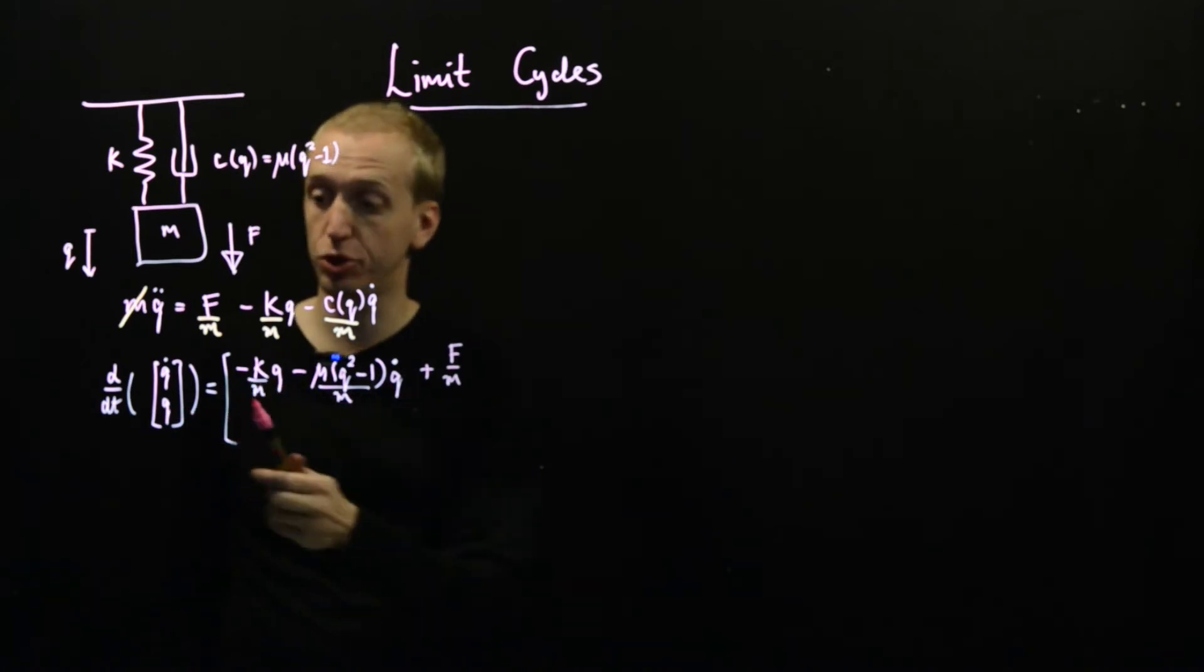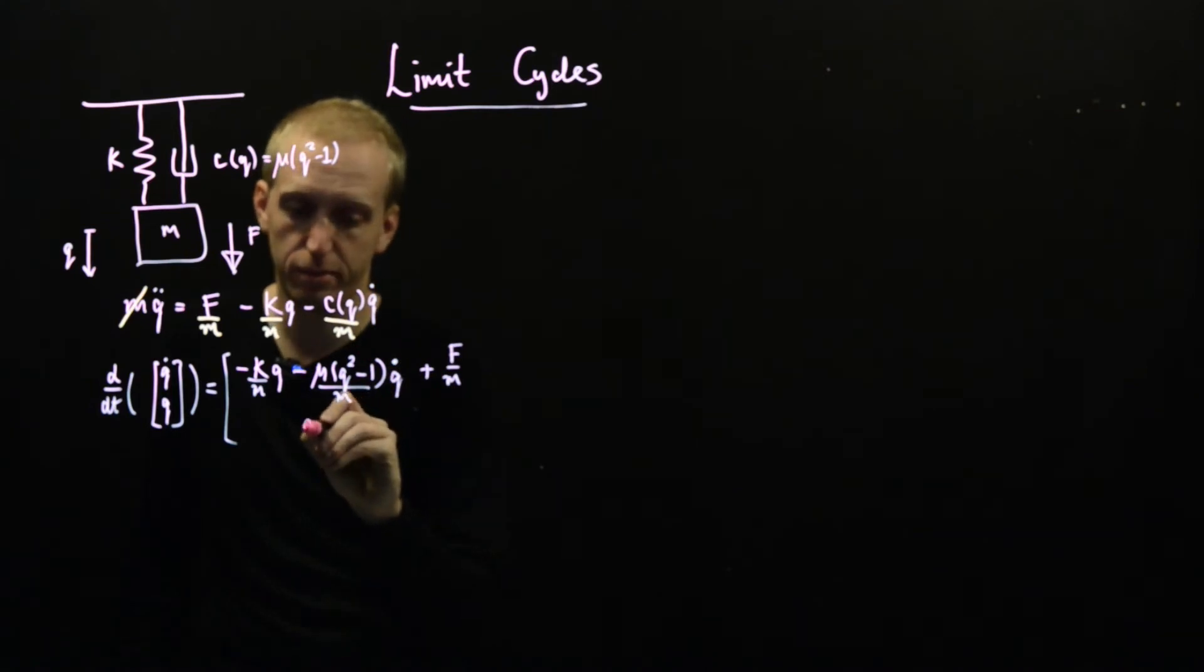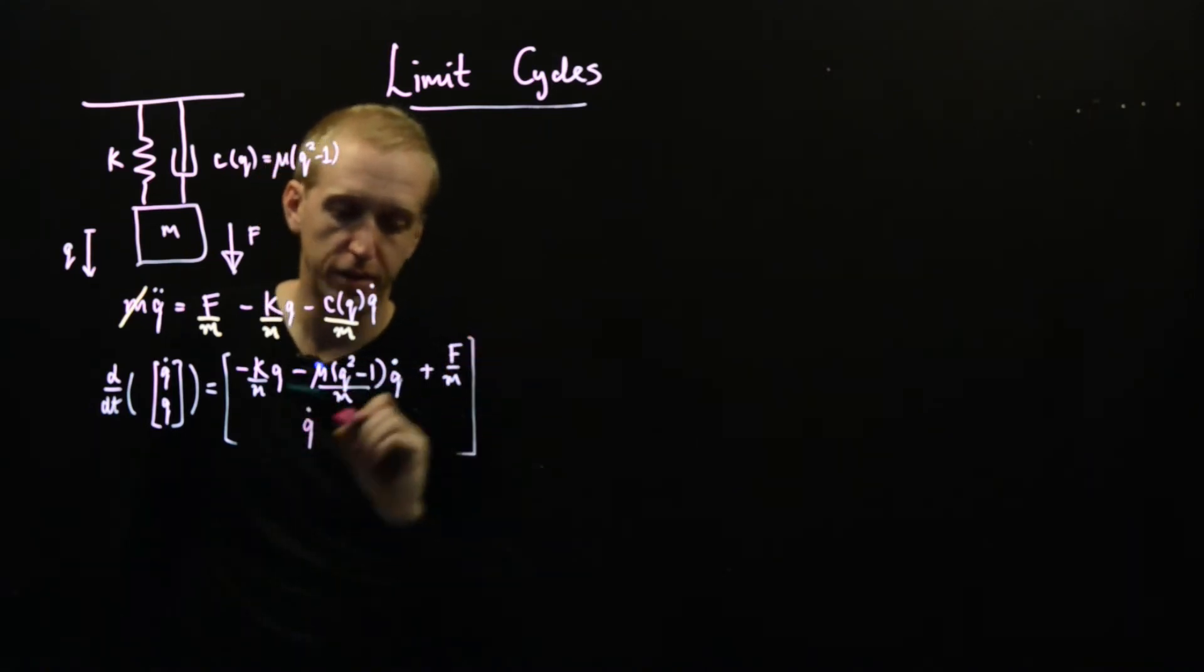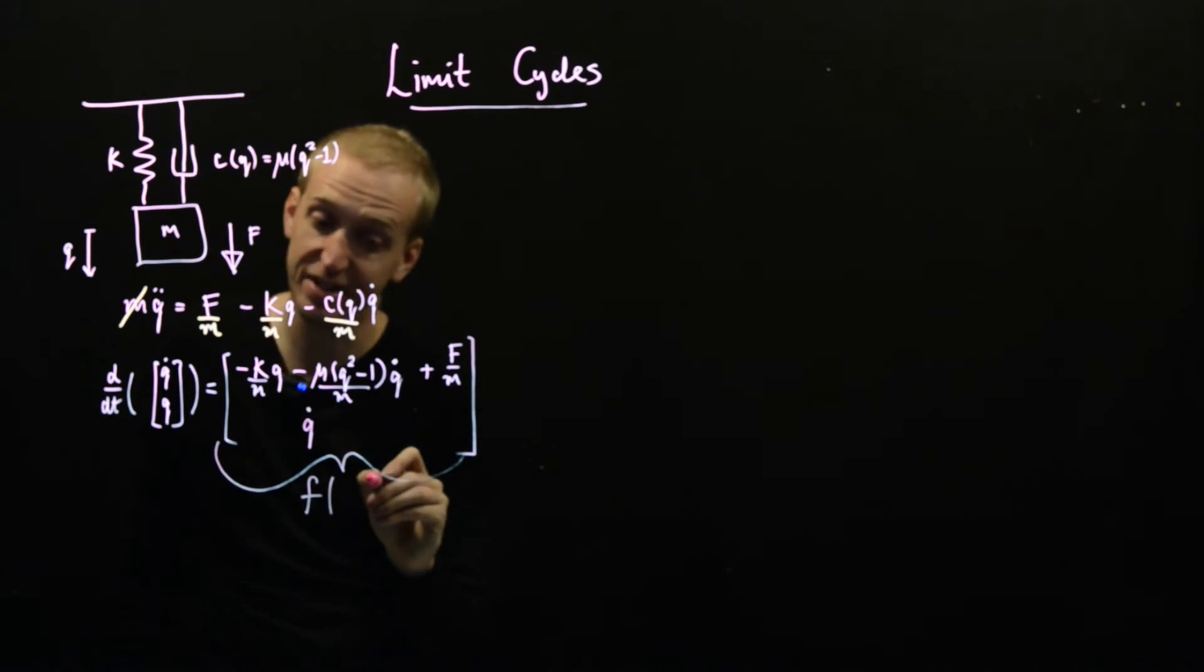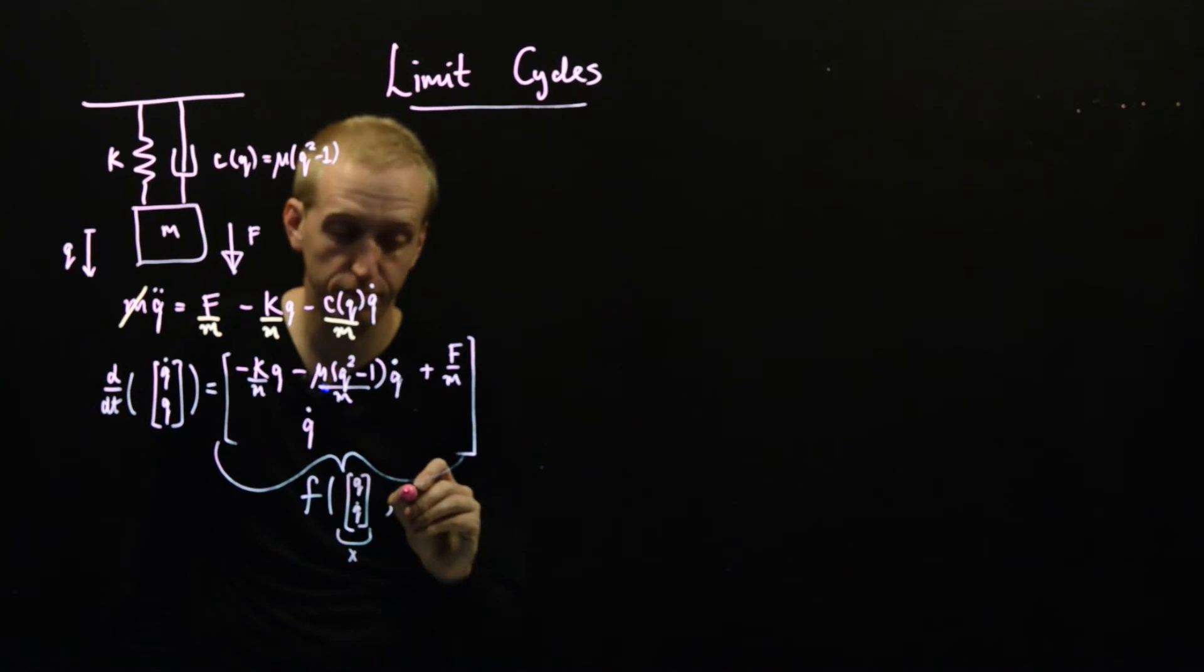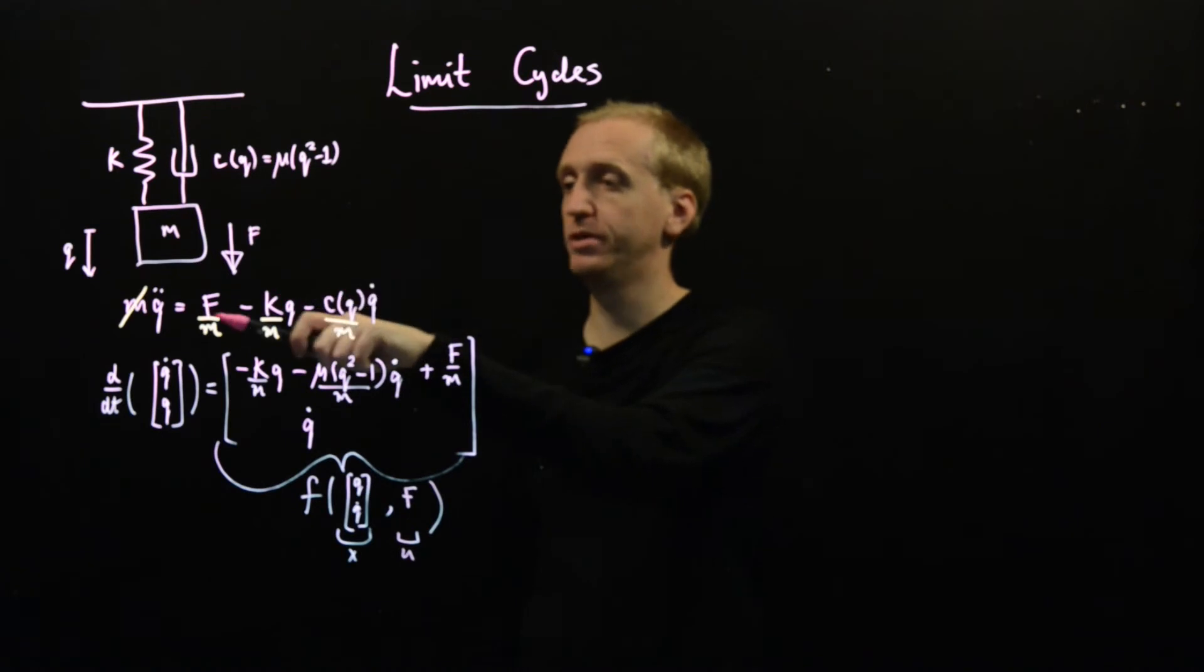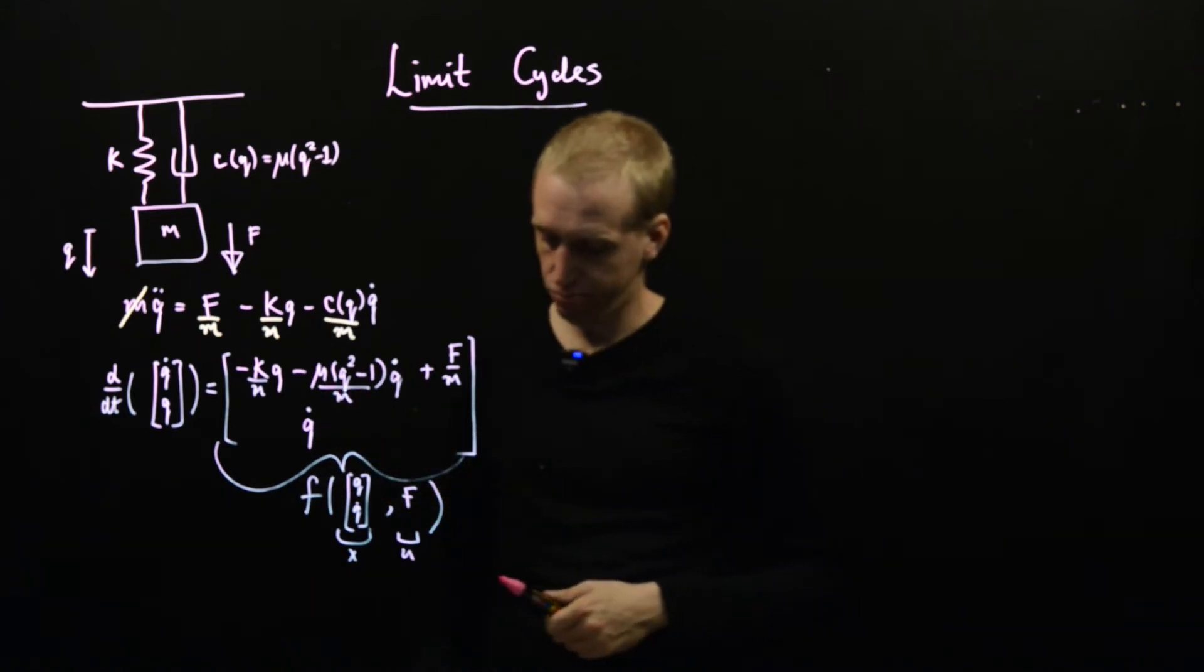So that gives us an equation corresponding to this first row. How about this second row? Well this just says d by dt of Q. So Q dot is equal to some function of our state in our input. But Q dot is in our state so we just put it here. And so the important thing to note is that this is a function of our state, which in this case is Q and Q dot. So that's X. And our input which in this case is this externally applied force. So just by a little massaging we can put this higher order nonlinear differential equation into our standard form. Okay. Great.